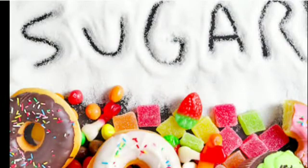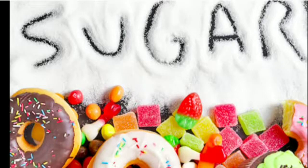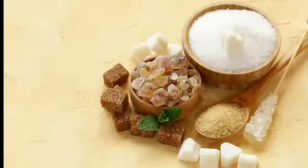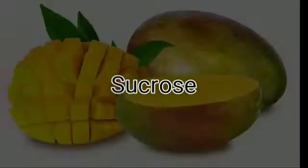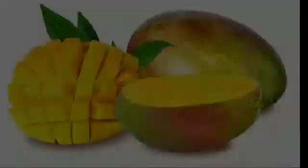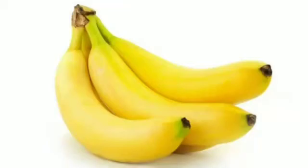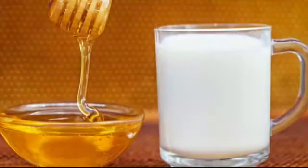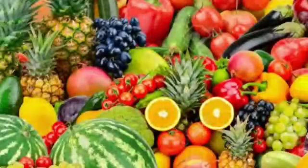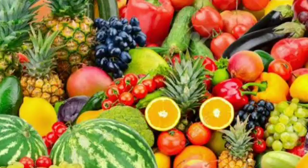Sugars: Foodstuffs that taste sweet contain different kinds of sugars. For example, we can obtain jaggery and table sugar from sugar cane because it contains a sugar called sucrose. Ripe fruits like mango, banana and chiku, as also honey and milk, also contain various kinds of sugars. They too give us energy.